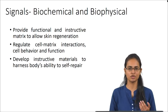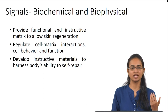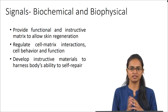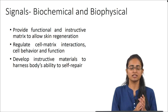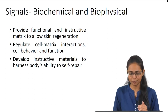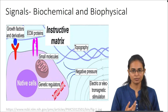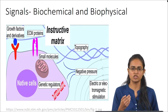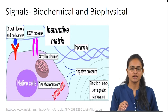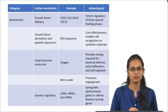The third component of the tissue engineering triad is signals, which can be biochemical or biophysical in nature. These signals provide a functional and instructive matrix to allow skin regeneration, regulate cell-matrix interactions, and control cell behavior and function. We can develop instructive materials rather than passive grafts, which can harness the body's innate ability to self-repair. Biochemical signals include growth factors and derivatives, ECM proteins, small molecules, and genetic regulators. Biophysical signals include the topography of the matrix, application of negative pressure, and electric or electromagnetic stimulation.